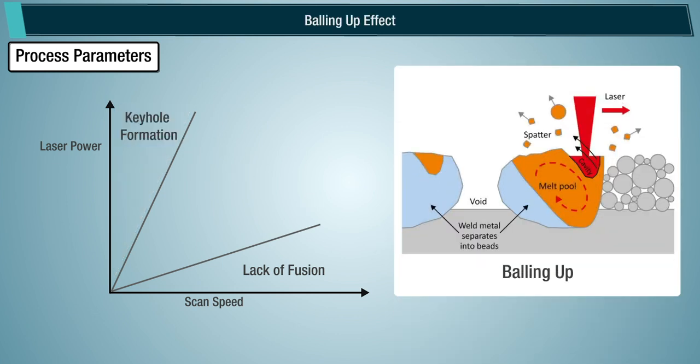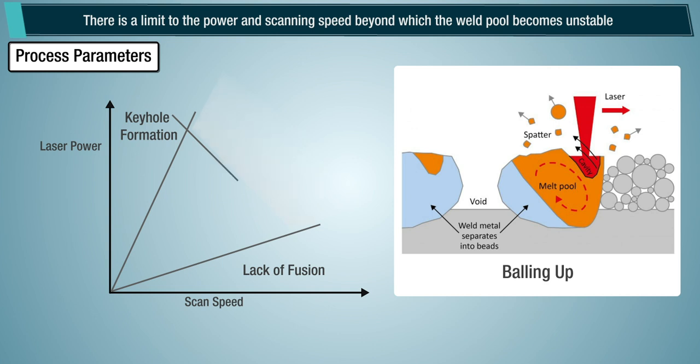Balling up effect. There is a limit to the power and scanning speed, beyond which the melt pool becomes unstable, leading to beading effect known as balling up. This also leads to an increase in spatter formation at higher power.